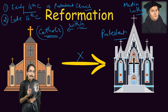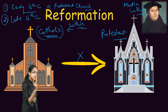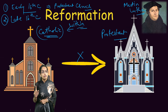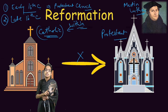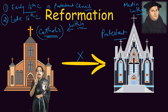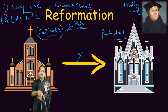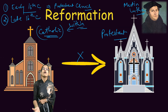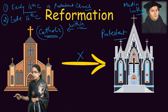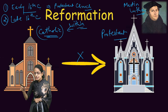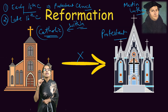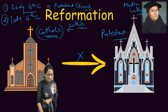Renaissance was the revival and rebirth in all fields of art, literature, religion, and politics. Therefore, Reformation — which is a religious offshoot of Renaissance — became very important. This led to the end of the medieval period and the beginning of the modern era.